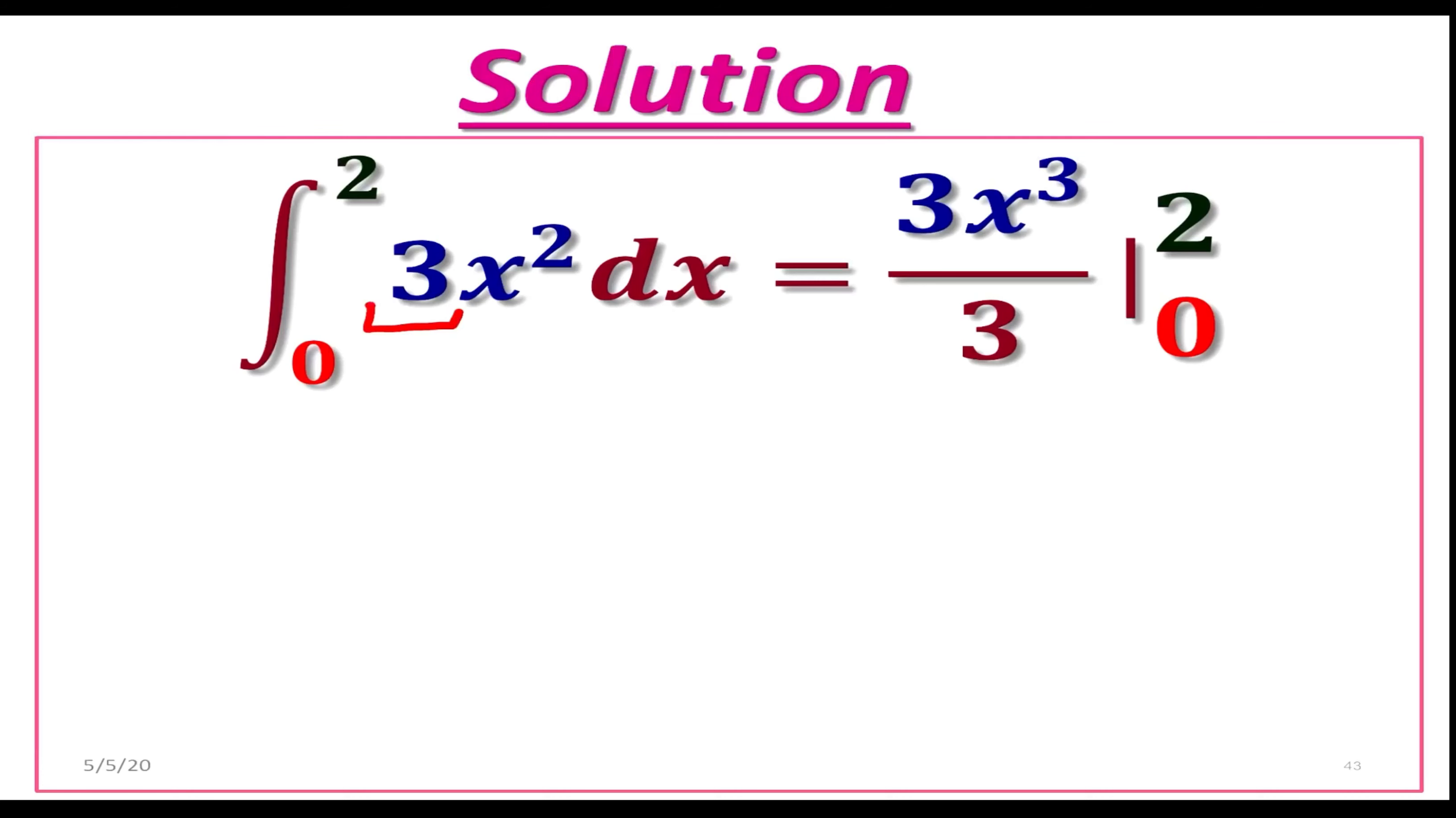We are going to plug in these two values into the antiderivative. Before this, we can cancel three from top and bottom, and it becomes just x to the cube. Now, let's plug in. We want to take two and replace x with two, and after we are going to do the same with zero, and we are going to subtract the answers.